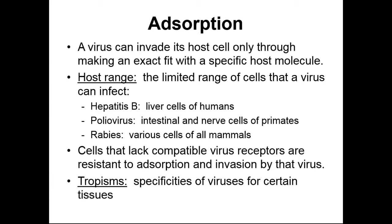It's been found that some small subgroups of people naturally don't have the correct receptors for the HIV particle to get into the cell. Those people are naturally resistant to HIV because HIV can never complete the first step — absorption — and get into their cells.